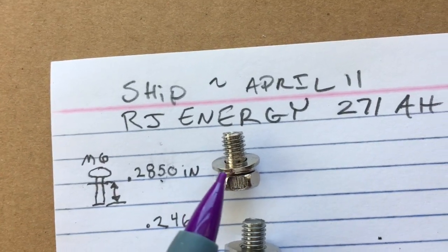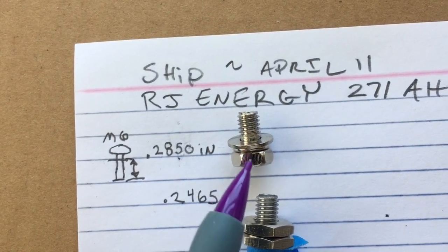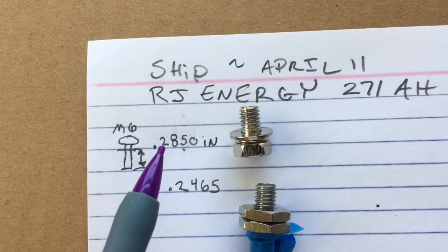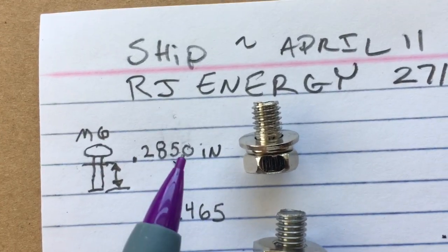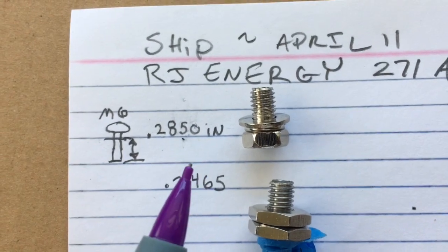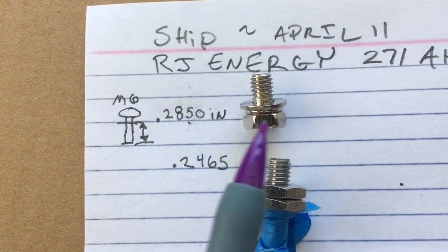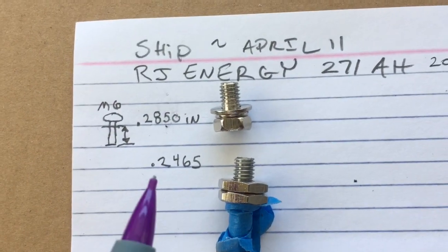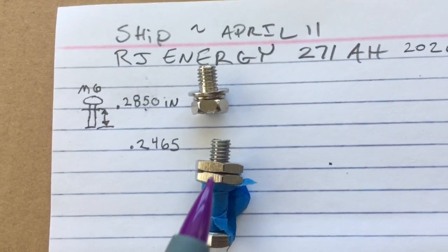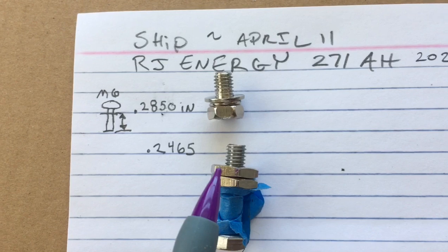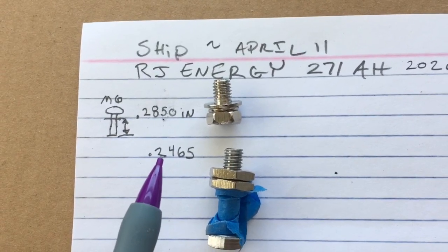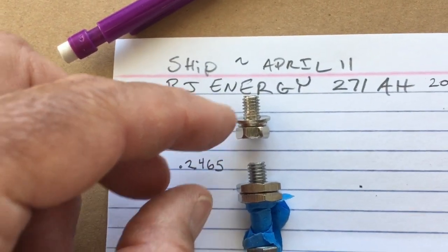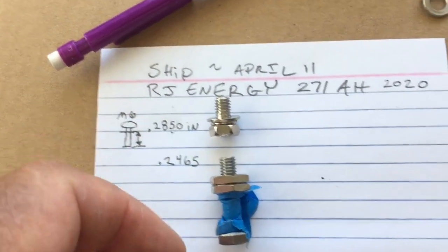If I measure from the base of the screw, this washer uncompressed to the end of the screw, I get 0.2850 inches. This is the standard M6 that came with my 271 amp-hour RJ Energy. If I put this screw in, this distance from here to here is 0.2465. So they give you a little bit of play in here. They send you the screws separately.